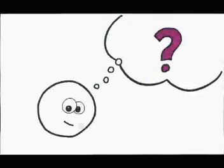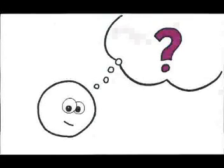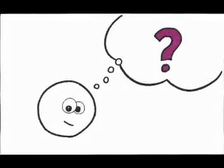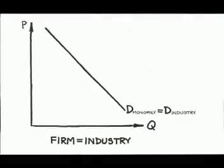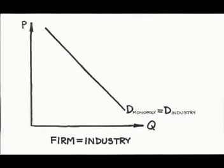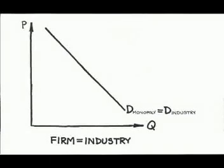What does the typical monopoly look like? Because the monopoly is the only seller of the product, anyone who wants to buy the product must buy from the monopoly. This means that the demand faced by the monopolist is the entire industry or market demand.